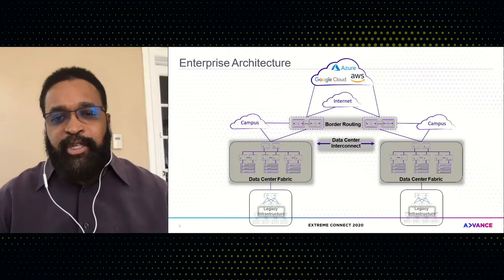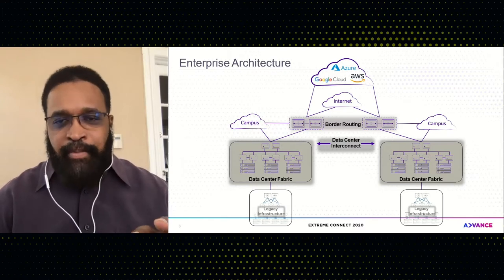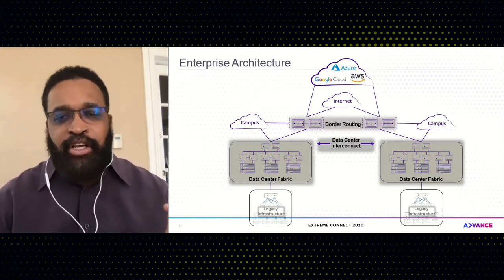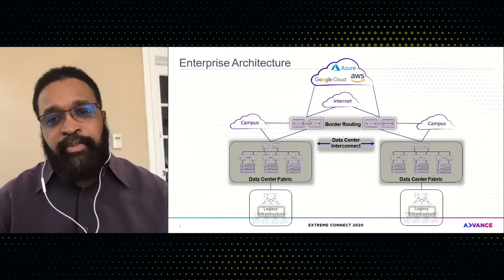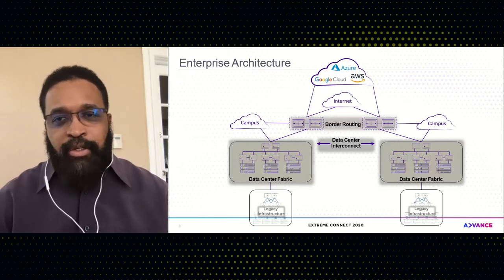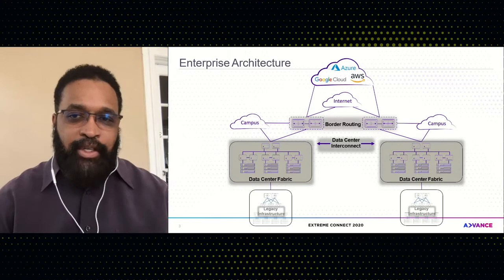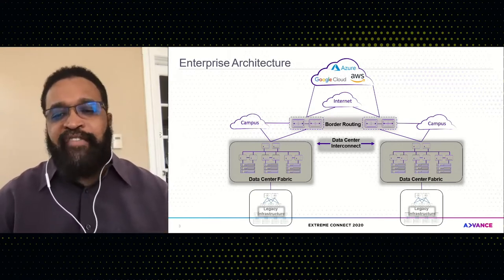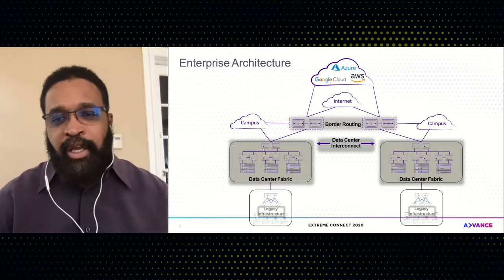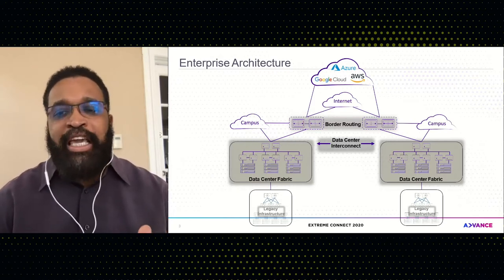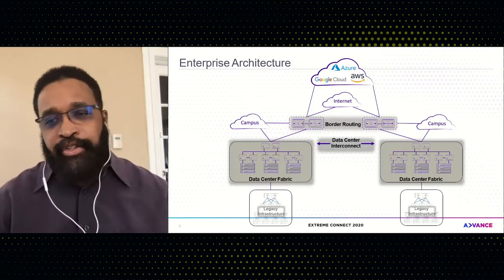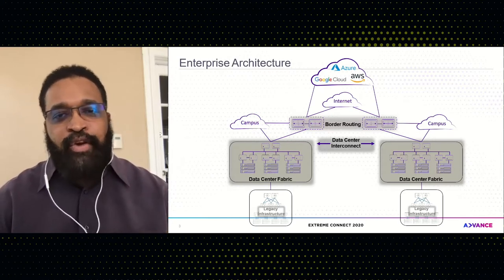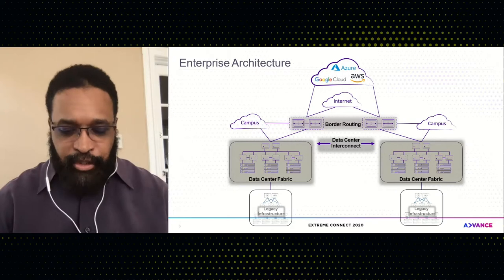From the enterprise perspective, looking at the data center from the macro, we see that the data center touches many different networks. It reaches out to the campus network, it extends out into the cloud and into the internet. It also connects other legacy infrastructures that you may have. In addition, it may need to communicate with other data centers. So it's important that we take all of this into consideration when building out our data center.